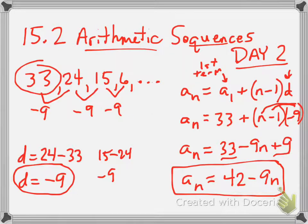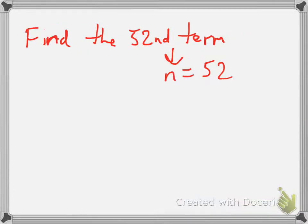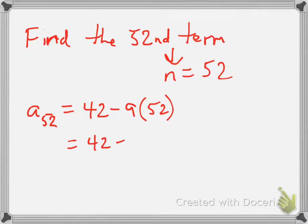So we come back to our formula right here, and we're going to use that to figure out what the 52nd term is. So it's a sub 52, because it's the 52nd term, equals 42 minus 9 times 52. So that's 42 minus 468. I just did that in my head. I hope that's right. 42 minus 468 is negative 426. So that is the 52nd term.